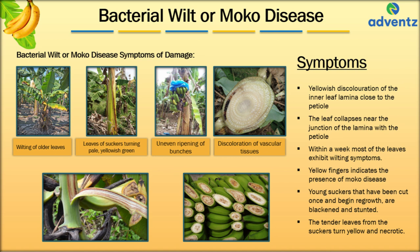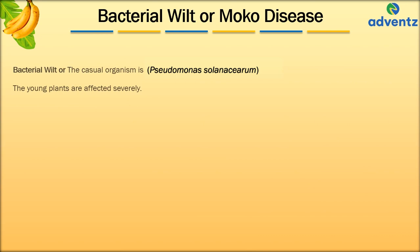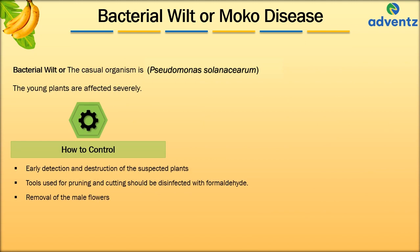To control Bacterial Wilt or Moco disease: early detection and destruction of suspected plants may help prevent the spread. All tools used for pruning and cutting should be disinfected with formaldehyde. As insects can carry the disease-causing bacterium on the male flowers, removal of the male flowers as soon as the last female hand has emerged also helps in minimizing the spread of the disease.